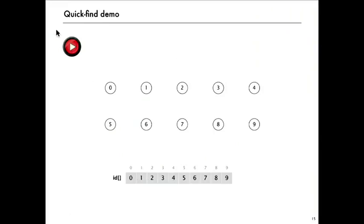We'll start with a demo of how this works. Initially we set up the ID array with each entry equal to its index, so all the objects are independent—they're in their own connected component. Now when we get a union operation, say 4 is supposed to be union with 3, we change all entries whose ID is equal to the first ID to the second one. In this case we'll change the 4 to a 3.